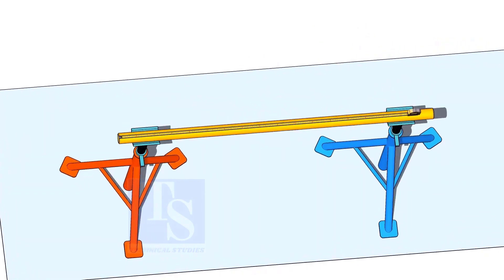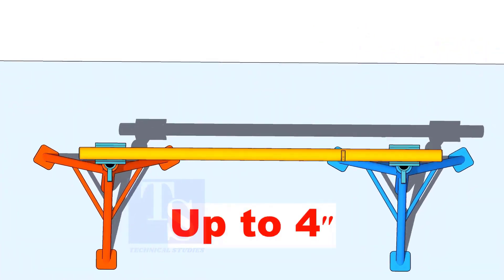For pipes, the diameter up to 4 inches, you can use a measuring tape to draw the circular line.